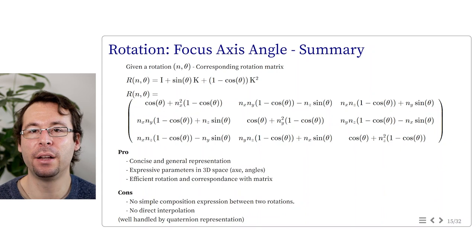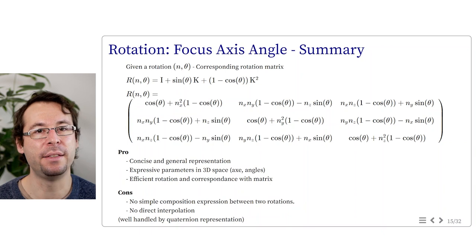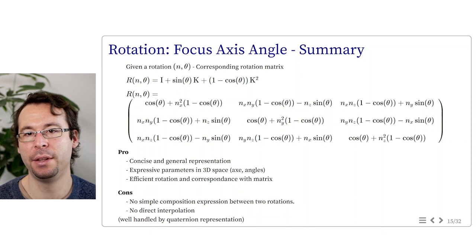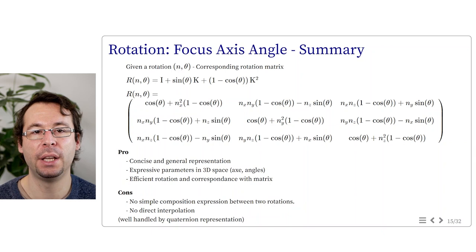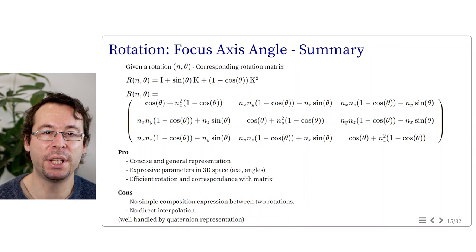As a summary, the axis-angle representation is concise with meaningful parameters — an axis and an angle — with a direct correspondence to a matrix, and you can efficiently apply it to a vector. However, it has limitations: there is no simple composition expression between two rotations with different axes, and you cannot directly interpolate rotation in this representation. These limitations are solved by quaternion representation.